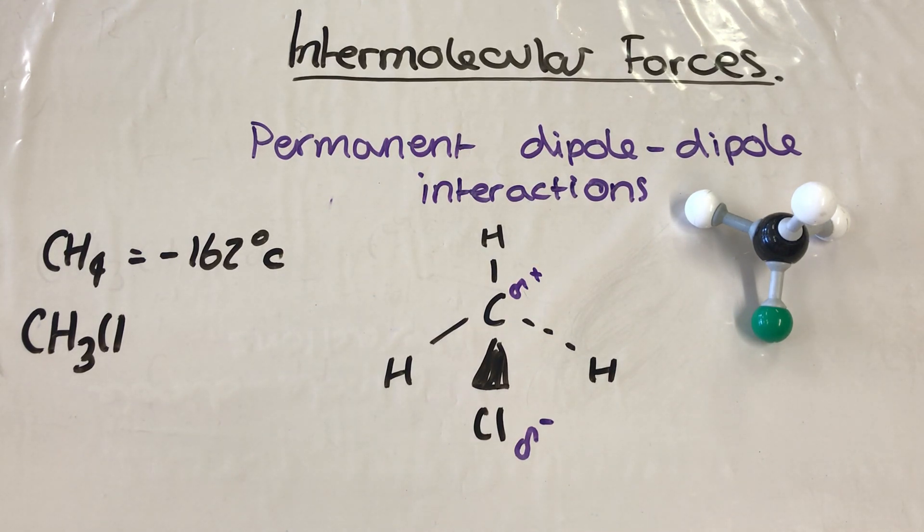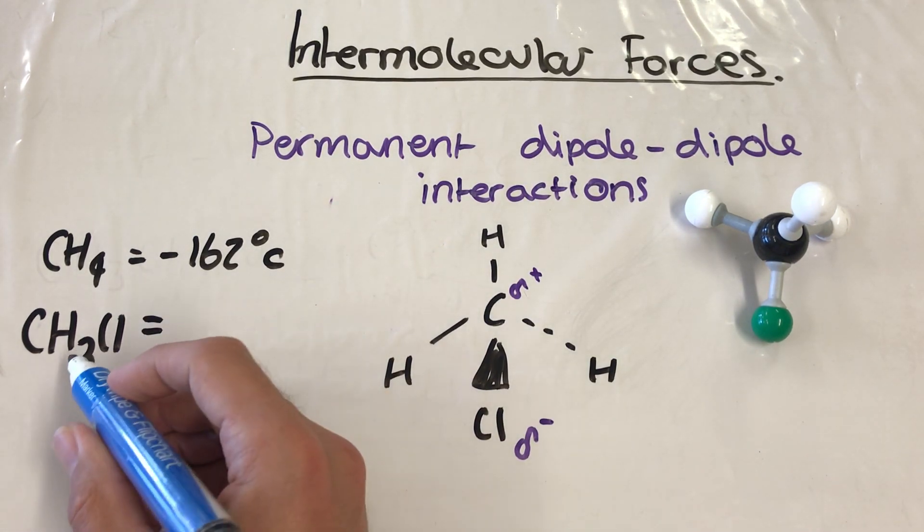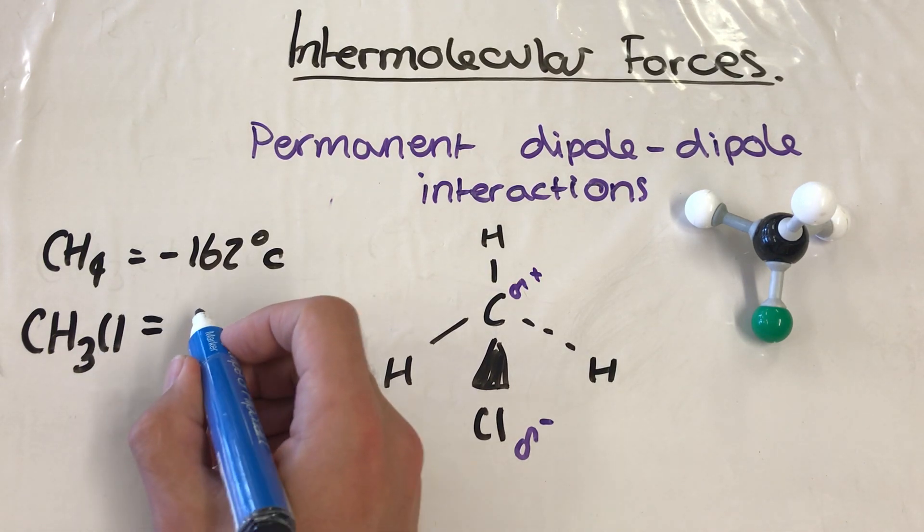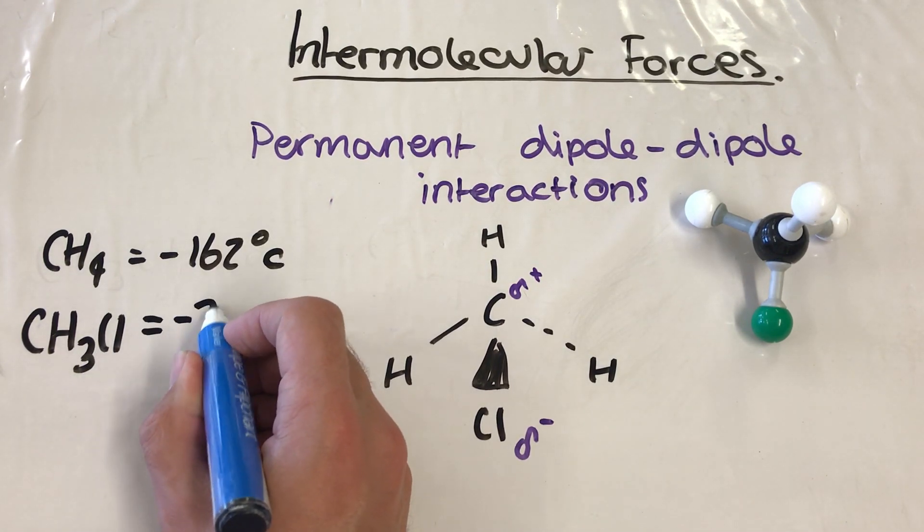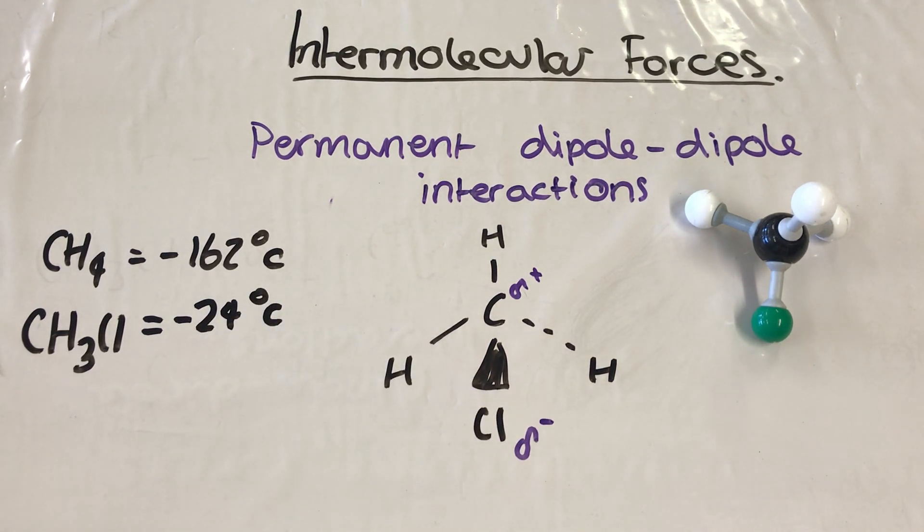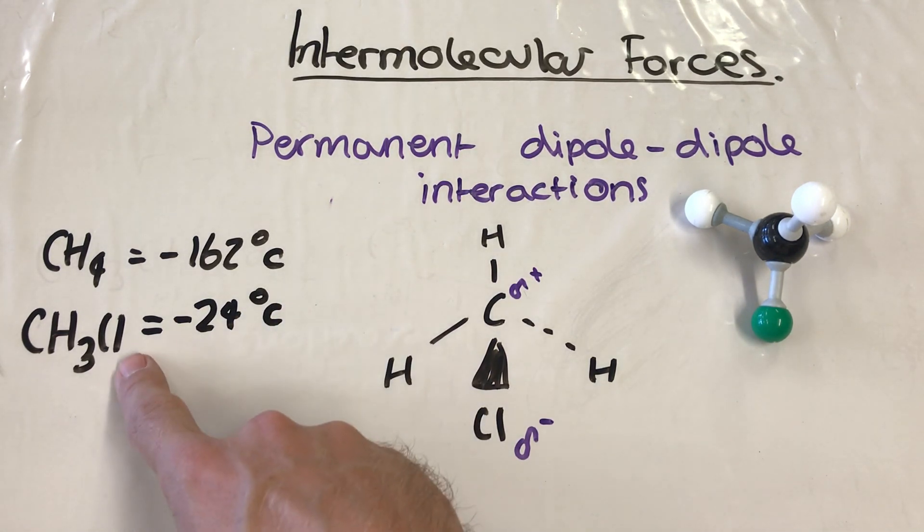Now the result of that is a stronger intermolecular force. So the boiling point, by adding a chlorine into our methane and swapping it over for a hydrogen, the boiling point then becomes minus 24 degrees Celsius. So we've got a significant increase in the boiling point here by changing over one of the hydrogens for a chlorine.